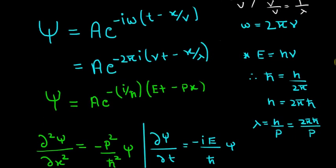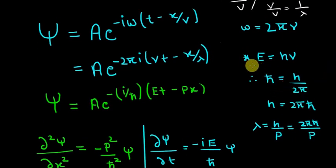Now we know that E equals h nu, and there is an entity h-cut which is really important in quantum mechanics because h upon 2π appears a lot. So we represent it by h-cut. So h in terms of h-cut is this, and if you put it in here we get 2π h-cut nu.